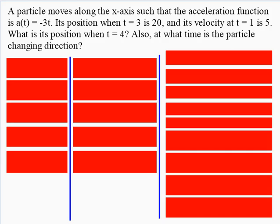Moving on to the next problem: a particle moves along the x-axis with acceleration function a(t) = -3t. The position when t = 3 is 20, and the velocity at t = 1 is 5. We need to find the position when t = 4, and also determine at what time the particle is changing direction. We'll work our way to the velocity function, then the position function.